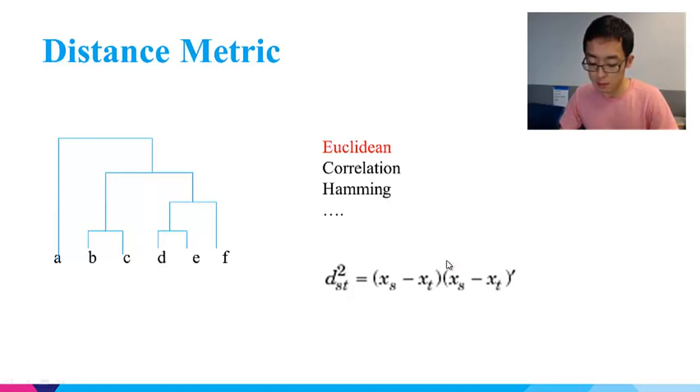Besides Euclidean distance, you can choose cosine distance, correlation distance, Hamming distance, and so on. But most of the time, Euclidean distance will do the job. One special case may be, for example, if your dataset is binary, you may want to use Hamming distance as your metric because it is specially designed for binary data.